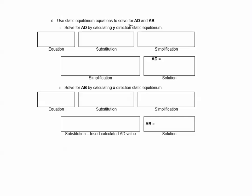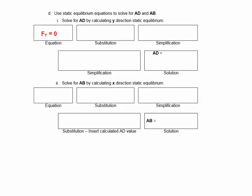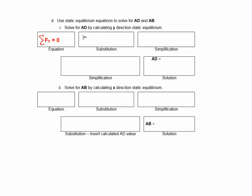Static equilibrium. They want us to find AD by calculating the Y direction static equilibrium. The reason we're starting with Y is there's only two forces in the Y direction, and we actually know one of them. So if we do F sub Y equals zero, sigma FY equals zero. The equation: it's going to be RAY plus the Y component of AD, ADY, and what does it equal? It equals zero.